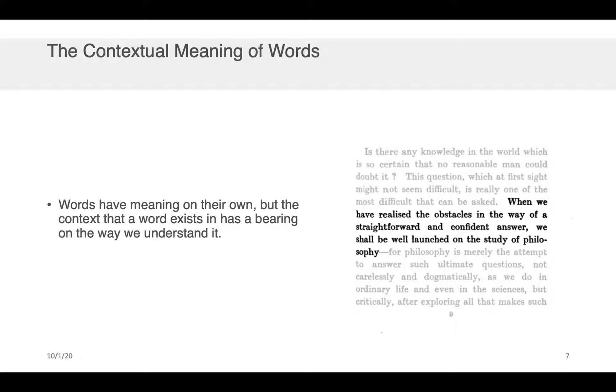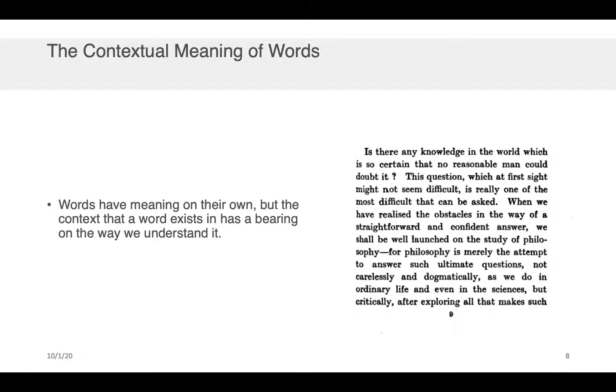We now know that the obstacles that were referred to are things in the way of our understanding of the topic of philosophy. So all of this is to succinctly say that the context that a word exists in has a huge consequence for how we understand that word, maybe even more so than the atomistic or kind of isolated meaning that a word has.